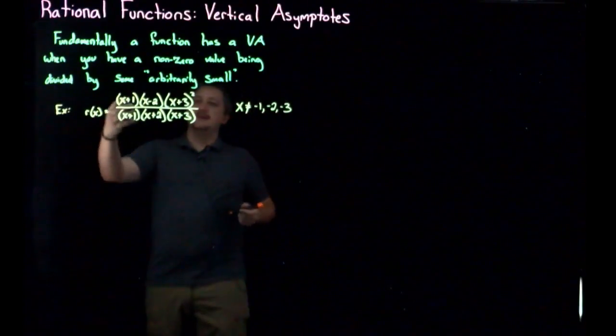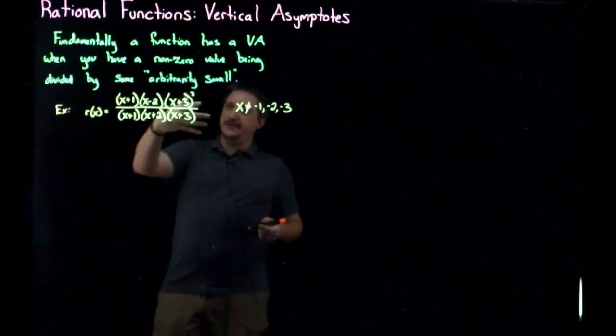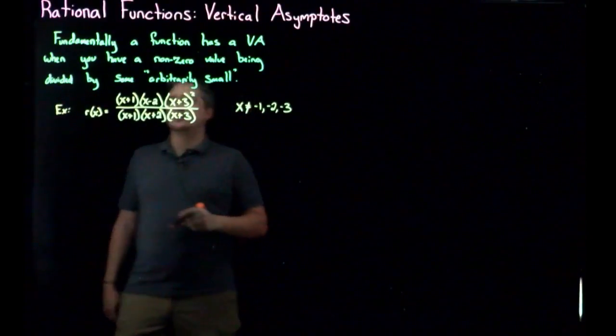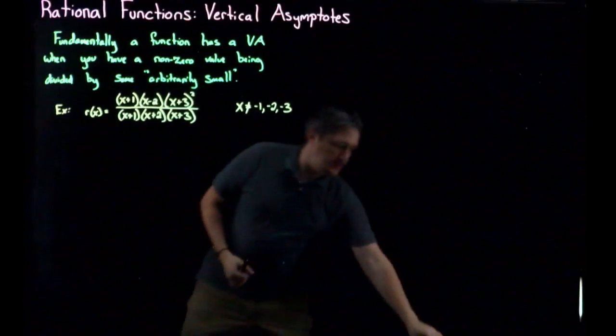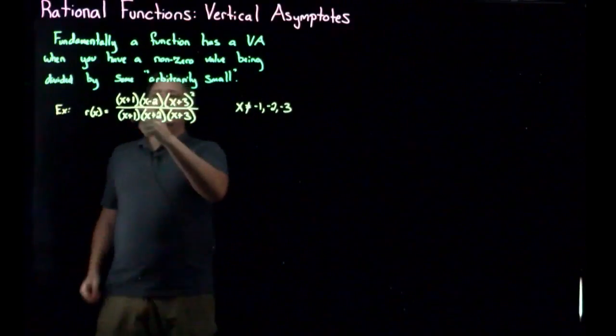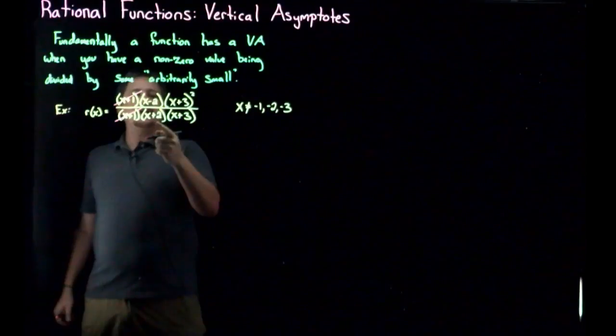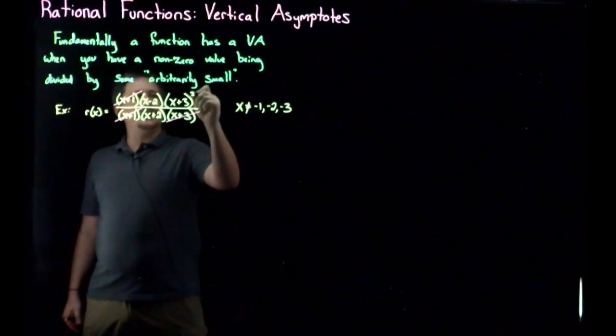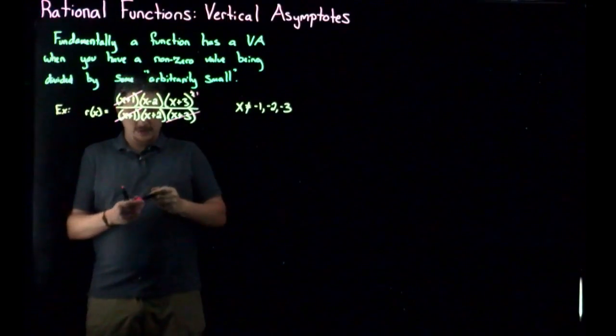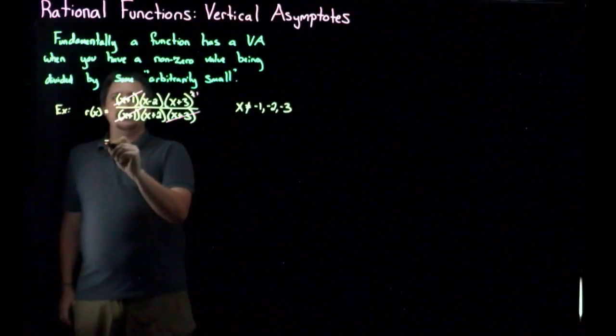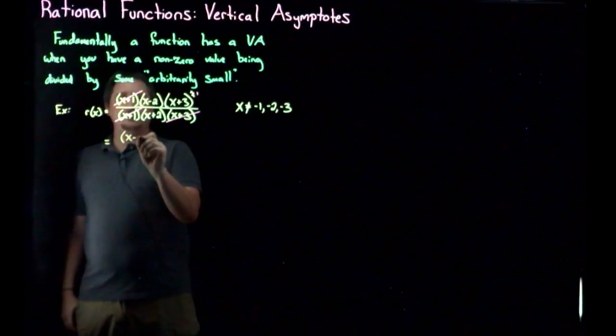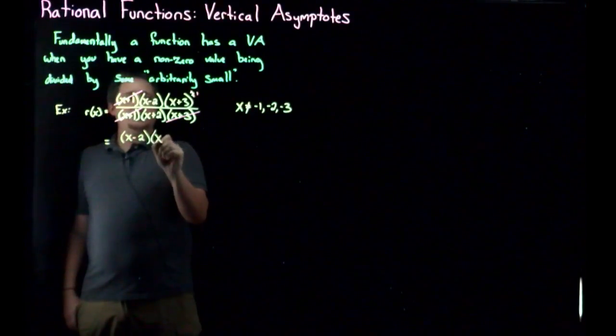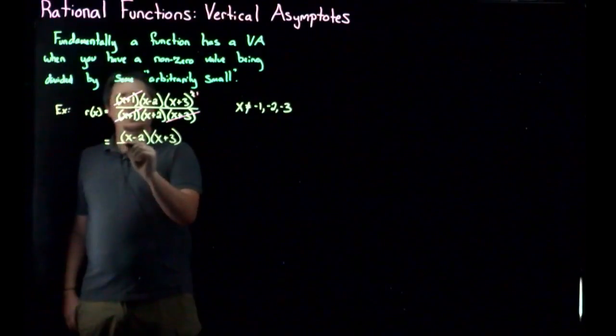But nonetheless, once I've noted the domain, I can simplify this thing and get rid of some of these terms. So in particular, the x+1 cancels, x+2 versus x-2, not the same, but I do have x+3 and x+3, so that cancels and I get rid of one of those. So if I simplify this then, I'm going to get (x-2)(x+3) over (x+2).